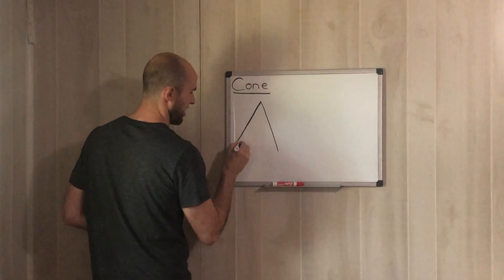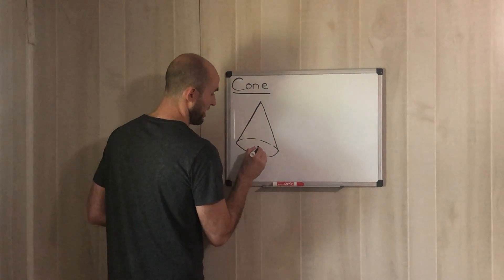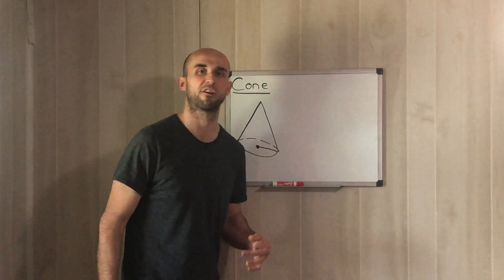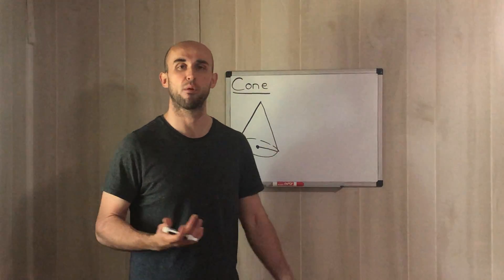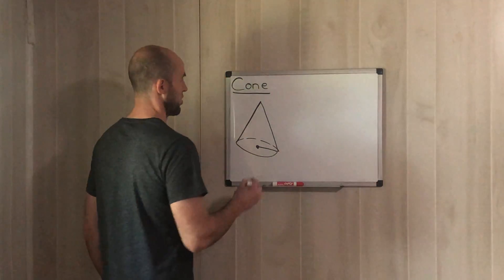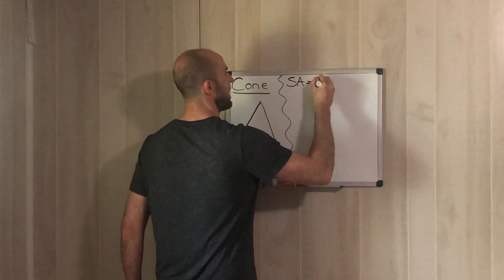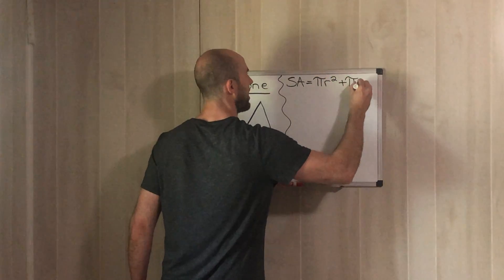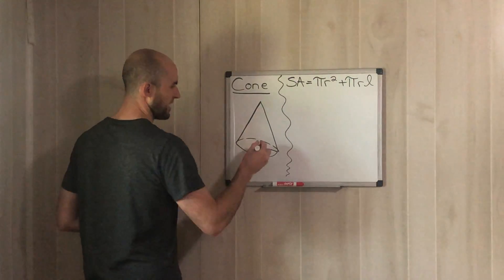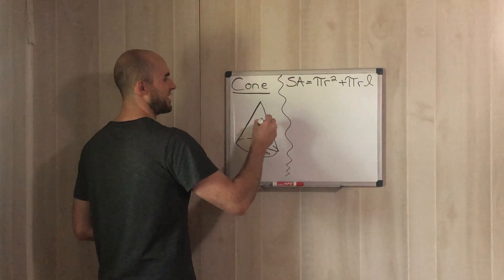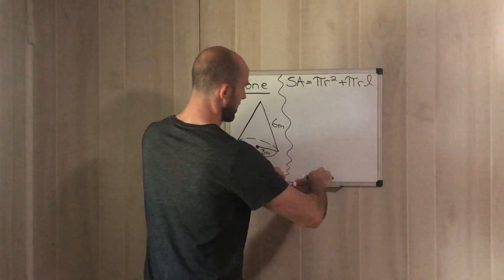A cone looks like an upside-down measuring cone — the base is a circle, and whenever you're dealing with a circle, the measurement you always need is the radius. Surface area represents the outside of the figure and volume represents the inside. The formula for surface area of a cone is: SA = πr² + πrl. The two measurements we need are the radius and the length. Let's say the radius is 3 meters and the length of the cone is 6 meters.